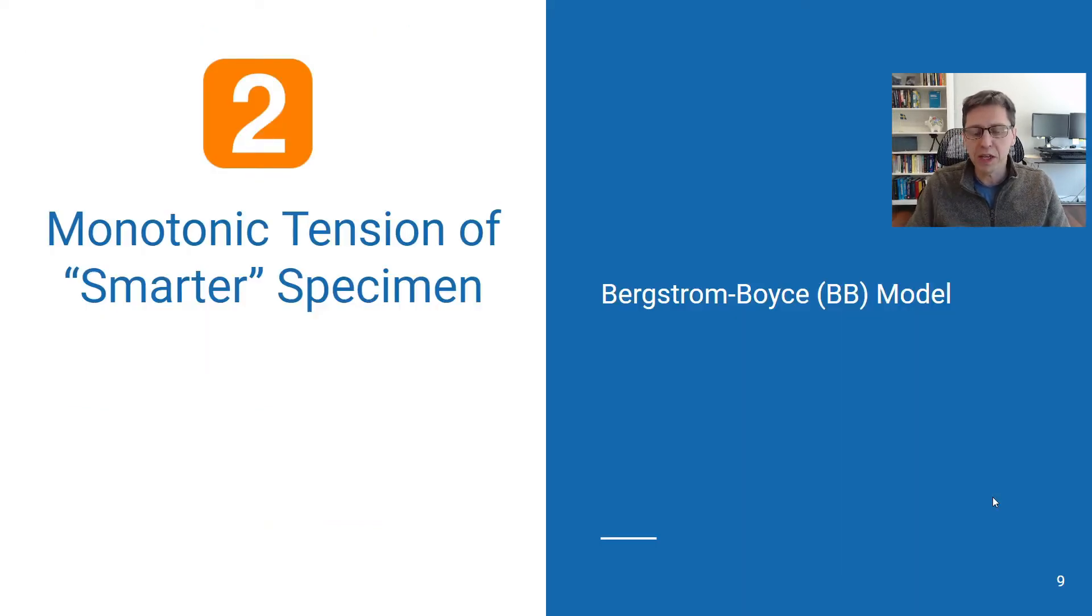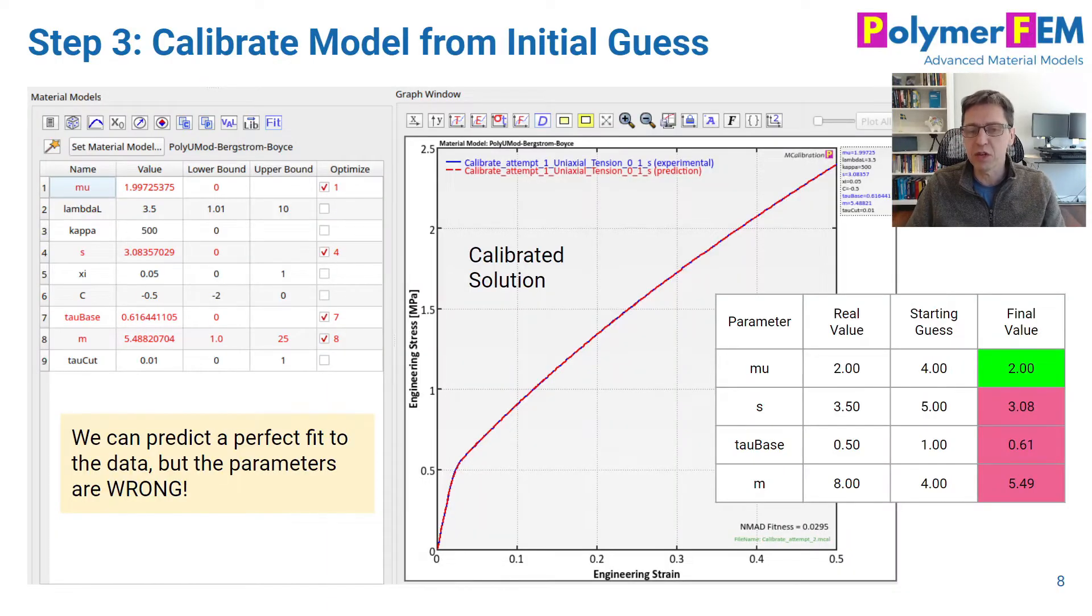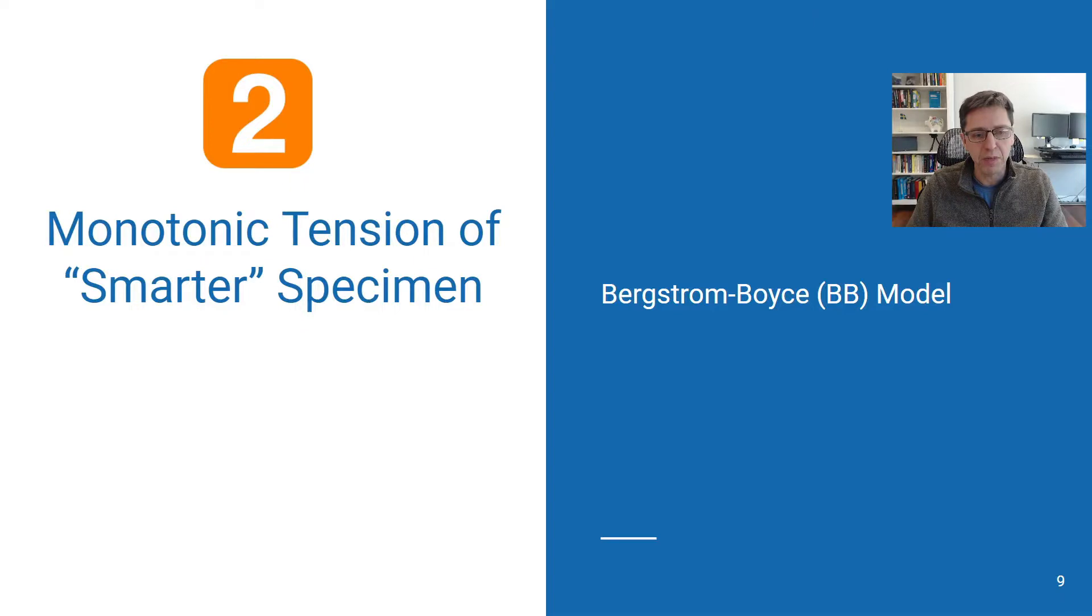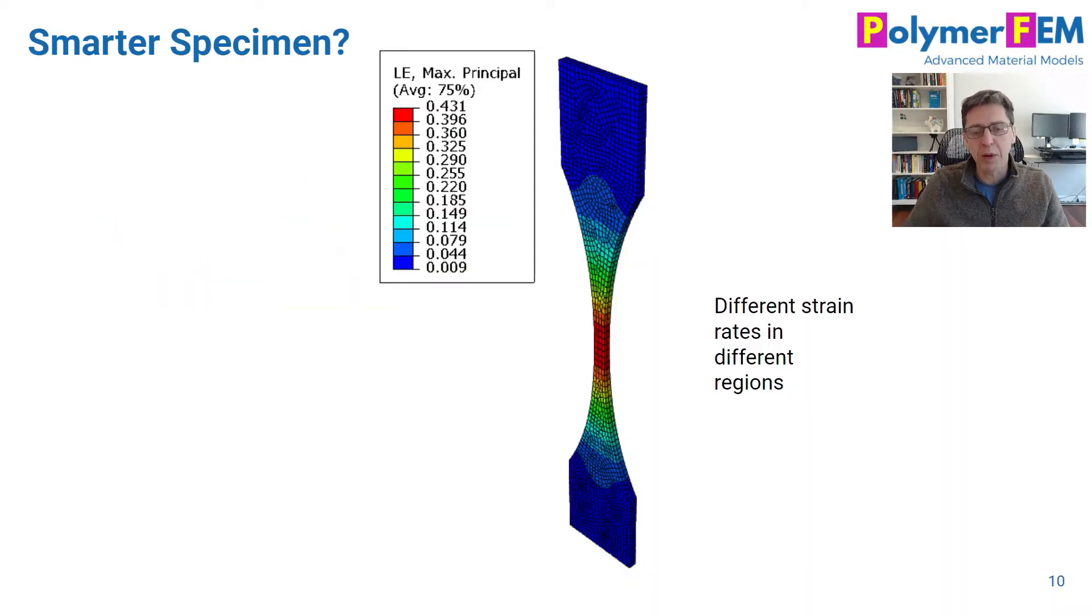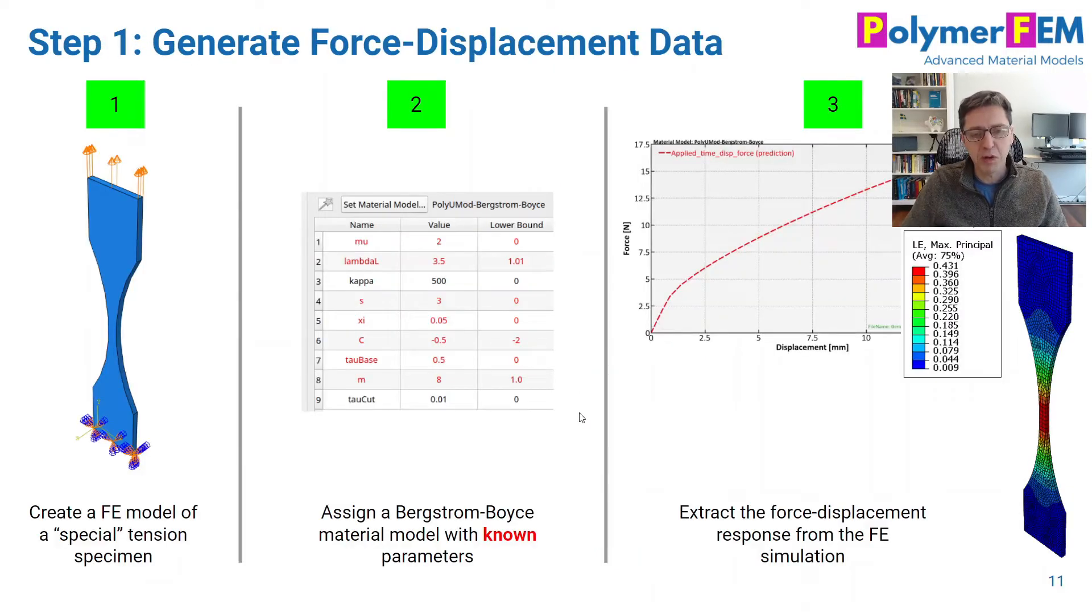But what if you think about this a little bit? The reason why it didn't work in this case was that we only had information at one strain rate. Can we be smarter and come up with a specimen, perhaps something like this, where we have a different cross-sectional area in different regions? In this case, if you run this in Abaqus, you'll see that the maximum strain here is much higher in the center than elsewhere. So one could argue that there will be different strain rates in different regions of this specimen, and therefore the predicted force-displacement response of this specimen in tension may have enough information to calibrate this type of strain rate dependent material model.